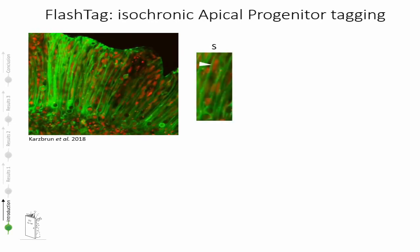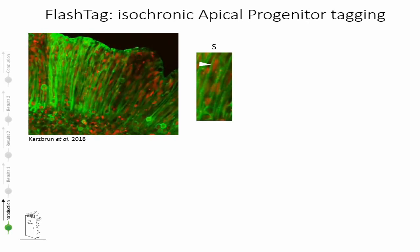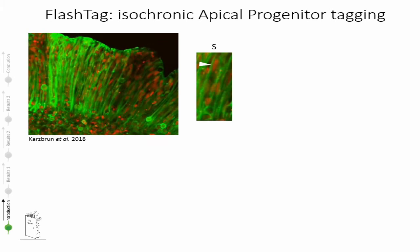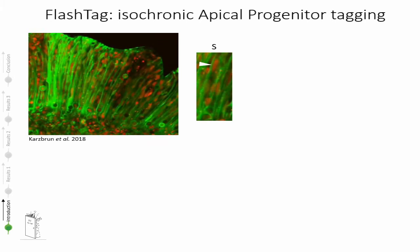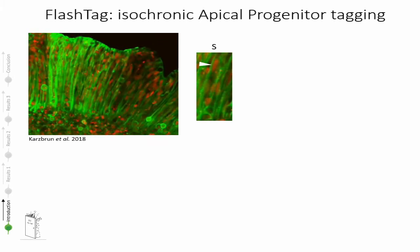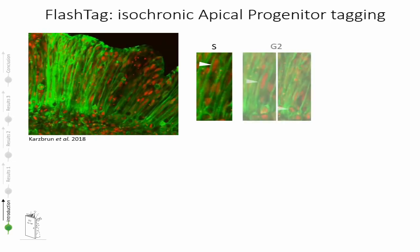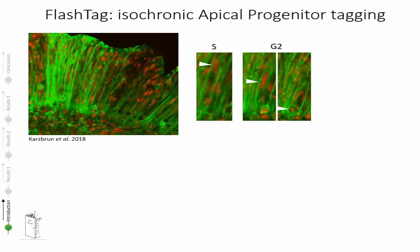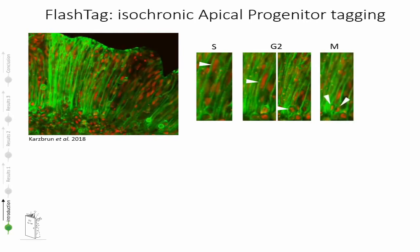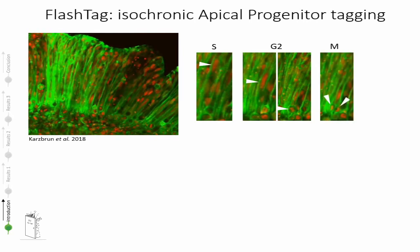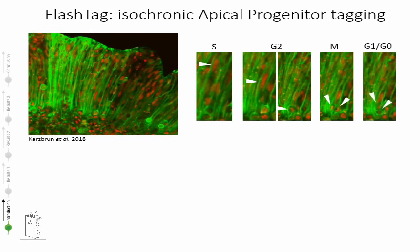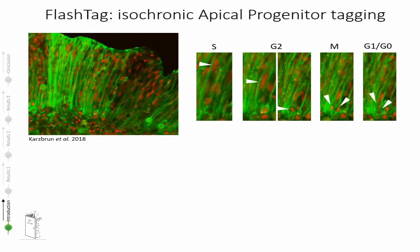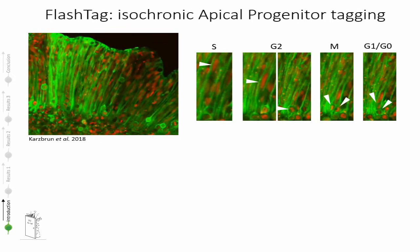The position that progenitors occupy in relation to the ventricular surface also corresponds to the cell cycle phase in which they are occupied. When they are furthest away from the ventricular surface, they are in S phase. During G2, they will approach the ventricular surface and then enter M phase when in contact with the ventricular surface. Once they leave this area, they will enter G1 or they will differentiate.